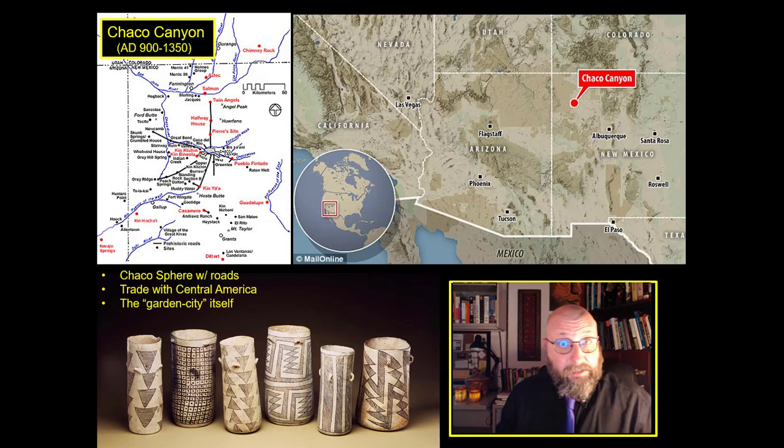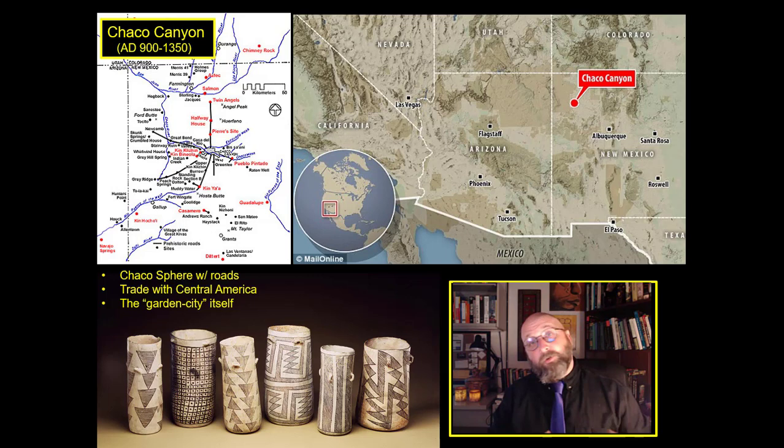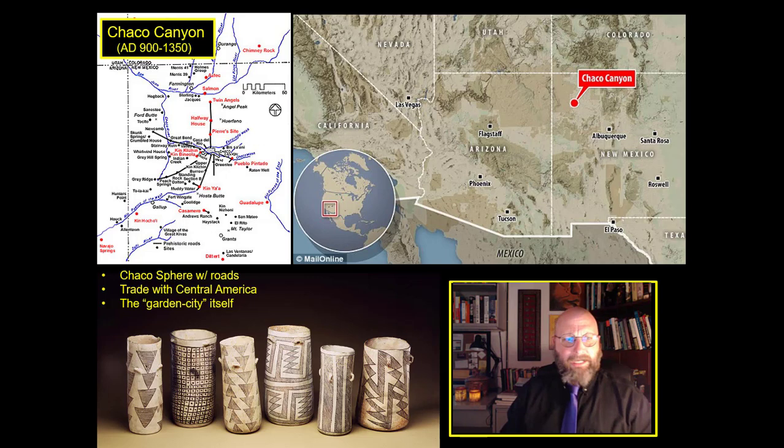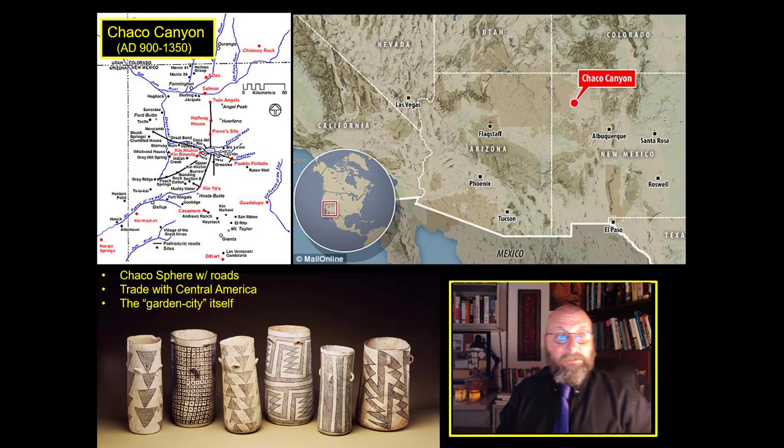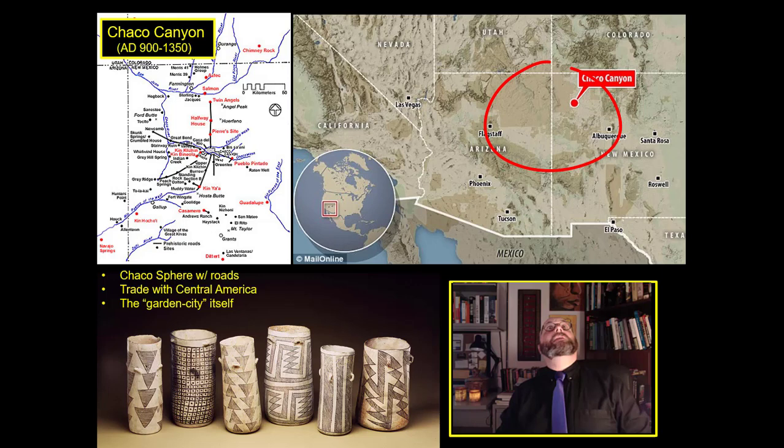Chaco Canyon is located in the American Southwest, and it prospered roughly between 900 and 1350. This was part of the ancestral Puebloan society. Chaco Canyon was a state — or at least from my reading of the literature, it certainly looks like a kingdom to me. It was quite a large kingdom, existing between Flagstaff and Albuquerque, right across the Four Corners region of Utah, Arizona, Colorado, and New Mexico — all centered on this main garden oasis city of Chaco Canyon.